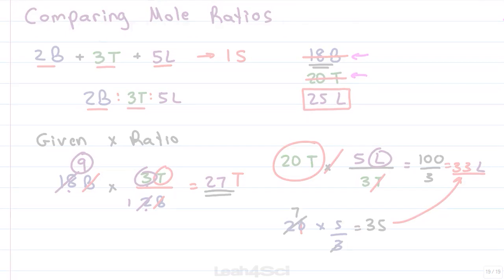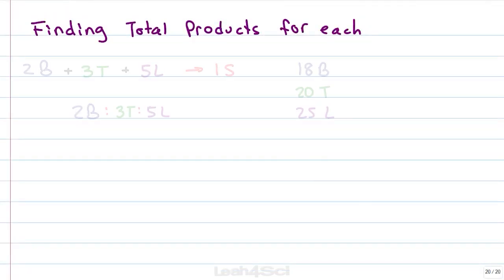The second option is finding the total products for each which will require a calculation that compares the reactant to the products. That means you're going to require 3 calculations, one each for bread, turkey and lettuce. Notice in the last attempt we only had 2 calculations to get our answer, here we need 3 calculations which is something to take into consideration when deciding which way to go.